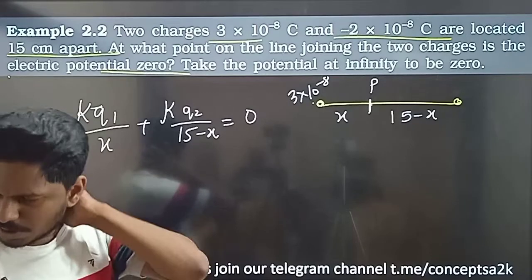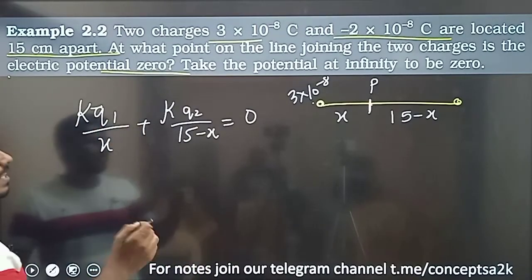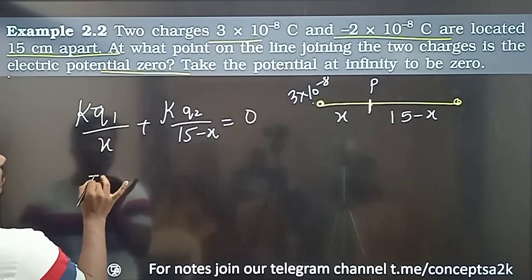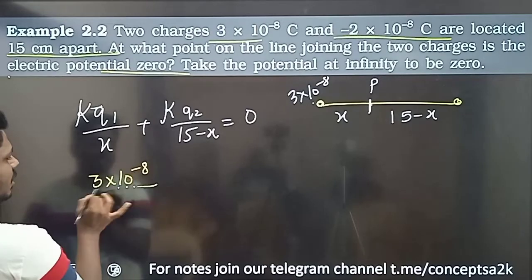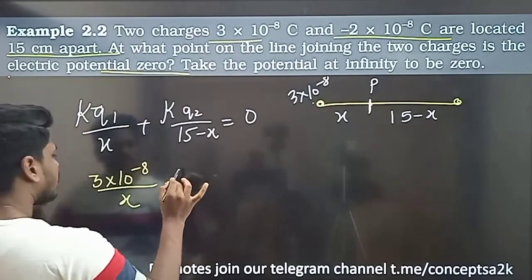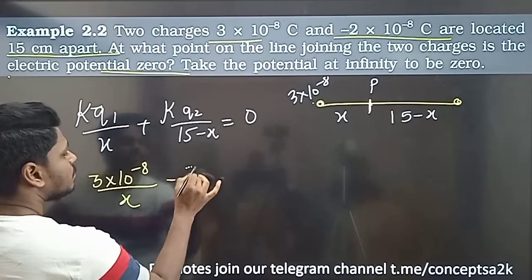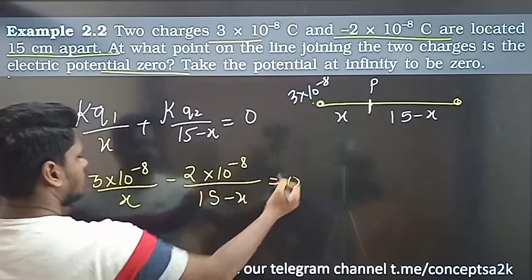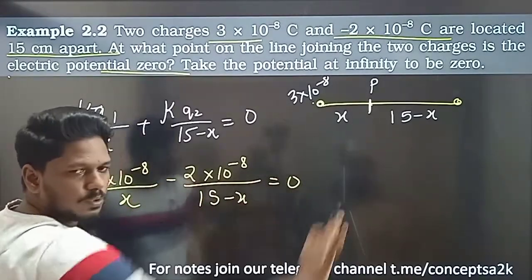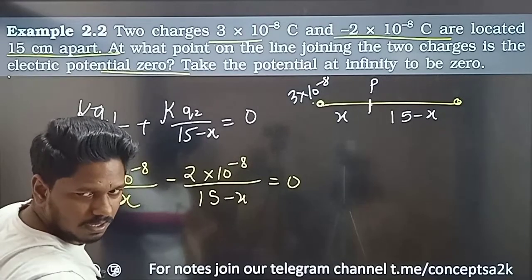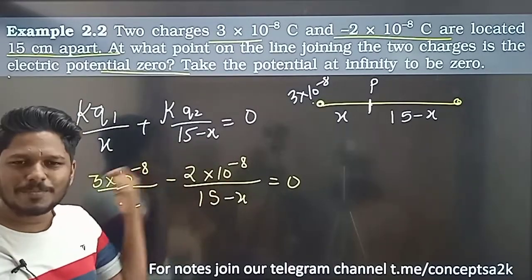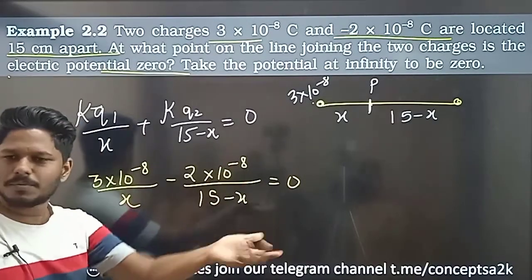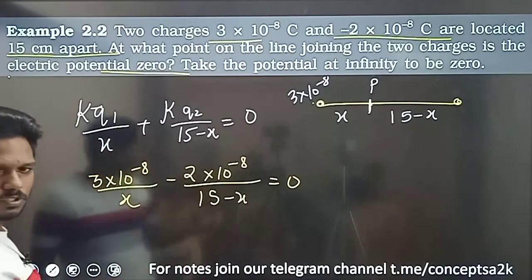Since K is common, it cancels out. The equation becomes: 3 into 10 power minus 8 divided by x equals 2 into 10 power minus 8 divided by 15 minus x. The 10 power minus 8 is also common and cancels. We are left with 3/x = 2/(15 - x).